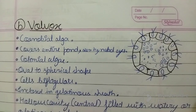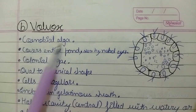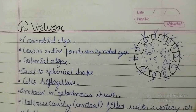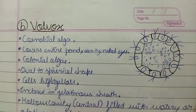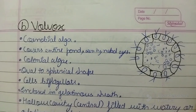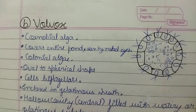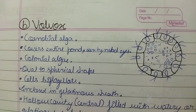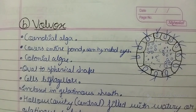So let us start with today's topic. Today's topic is Volvox. The classification of Volvox goes like: it belongs to the class Chlorophyceae, order Volvocales, family Sphaerellaceae, and the genus Volvox.